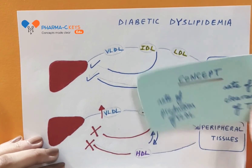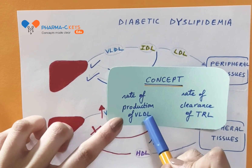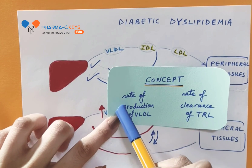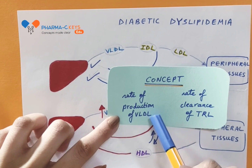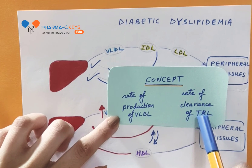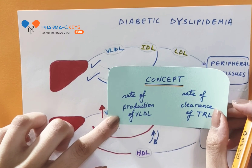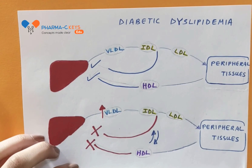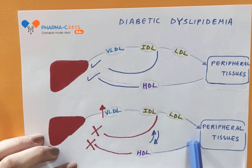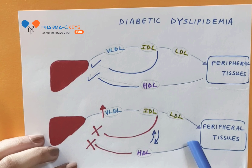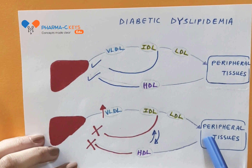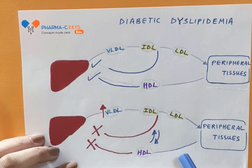So, I hope the concept is clear for you now, that in diabetic dyslipidemia there is increased rate of production of VLDL particles and decreased clearance, which leads to increased residence time and therefore resulting in diabetic dyslipidemia. This applies to patients with uncontrolled type 1 diabetes mellitus or insulin-resistant type 2 diabetes, as we are going to see in the full lecture. We will also understand how statins are the cornerstone in the treatment of this condition.